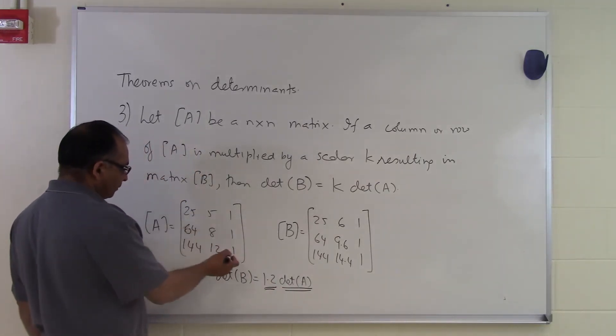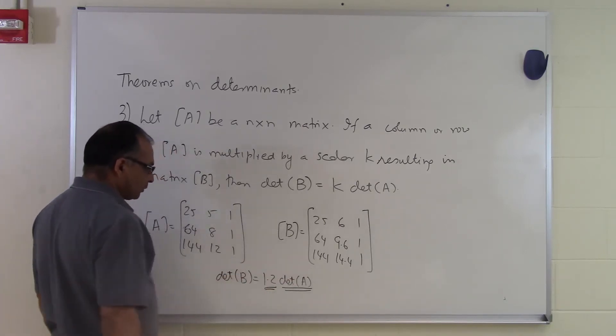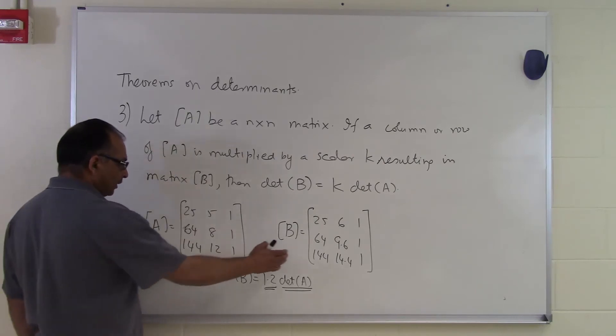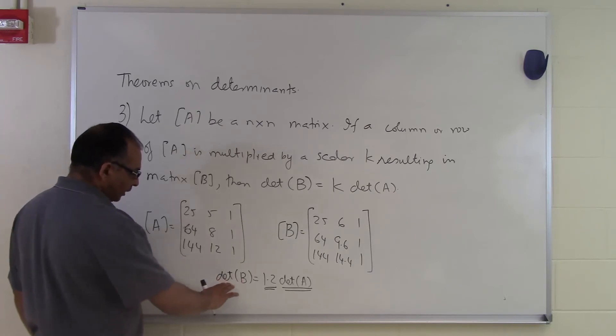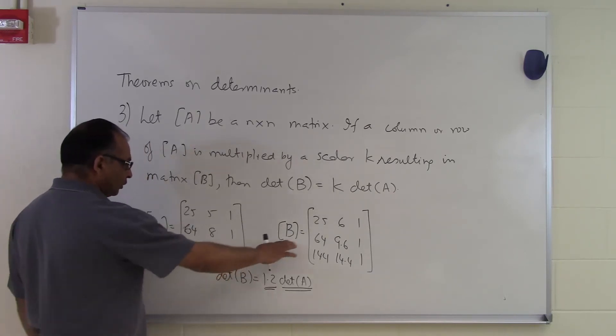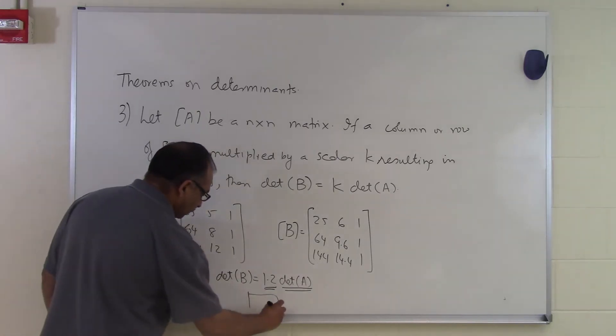So for example, the determinant of this matrix is minus 84. So I can say that the determinant of B is 1.2 times minus 84. So I don't have to find the determinant of this matrix by using the elementary methods. I can simply say the determinant of B is 1.2 times the determinant of A. And that's the end of this segment.